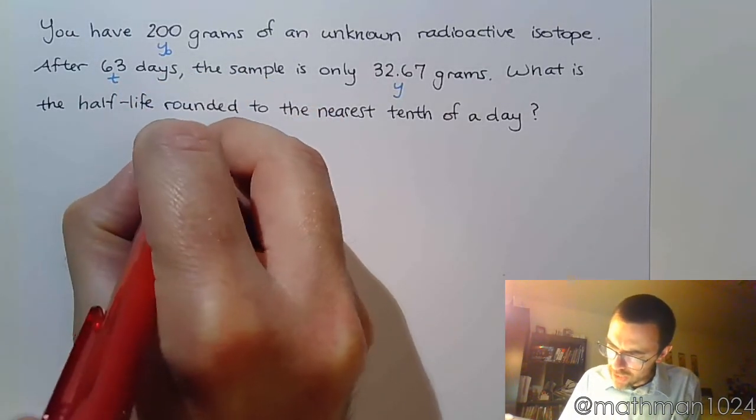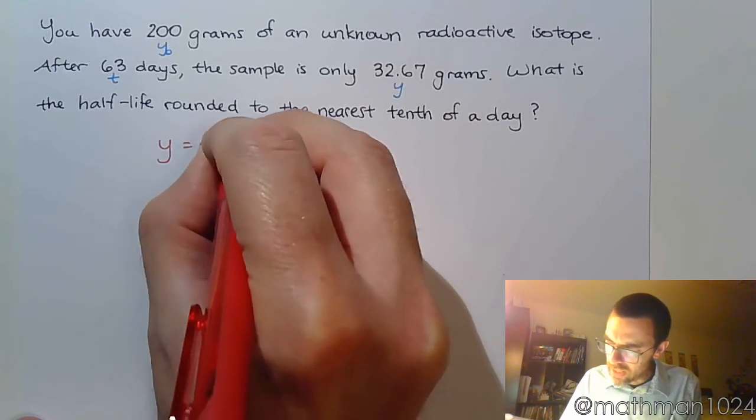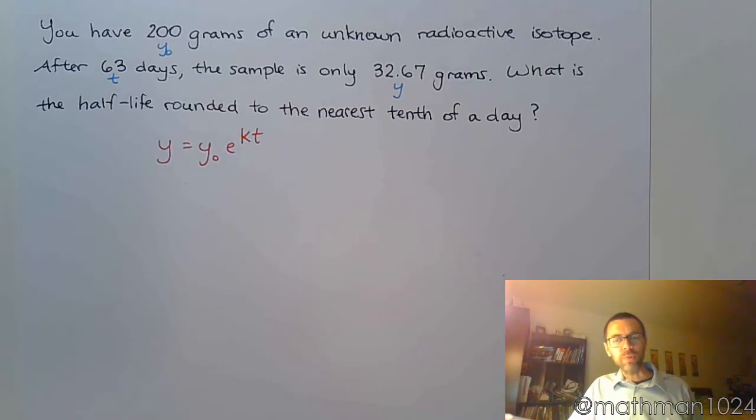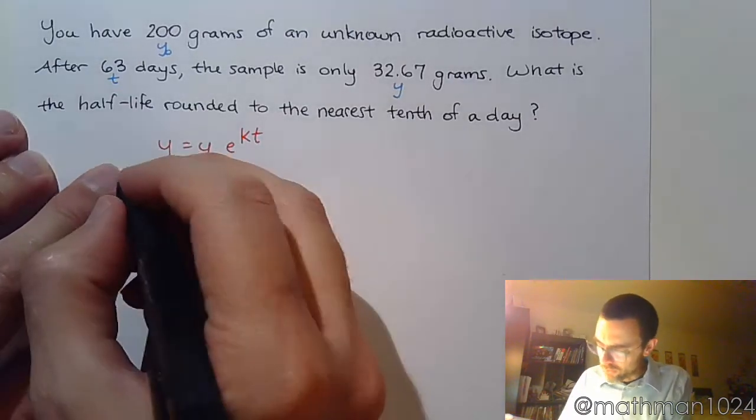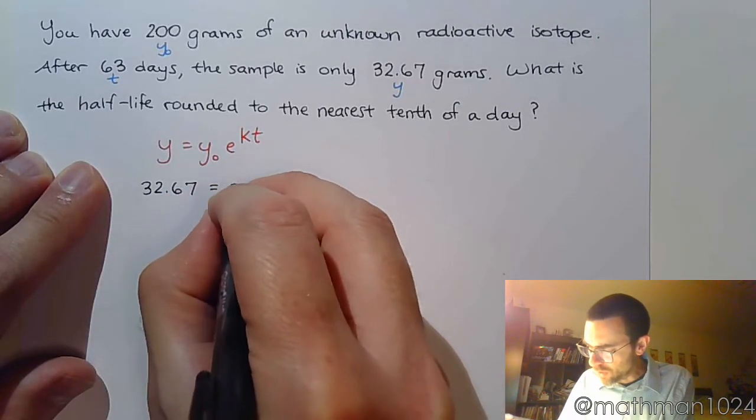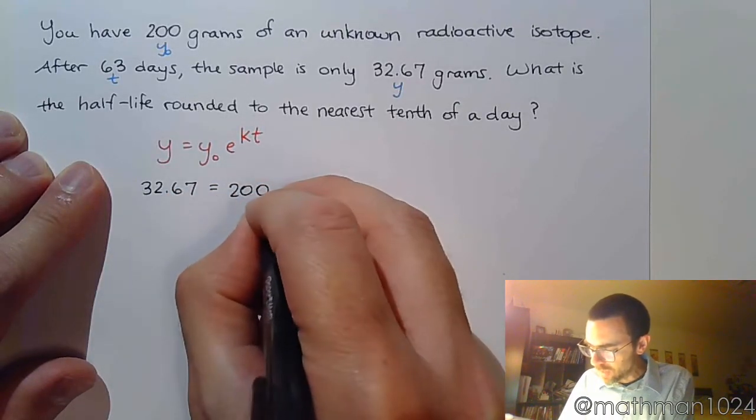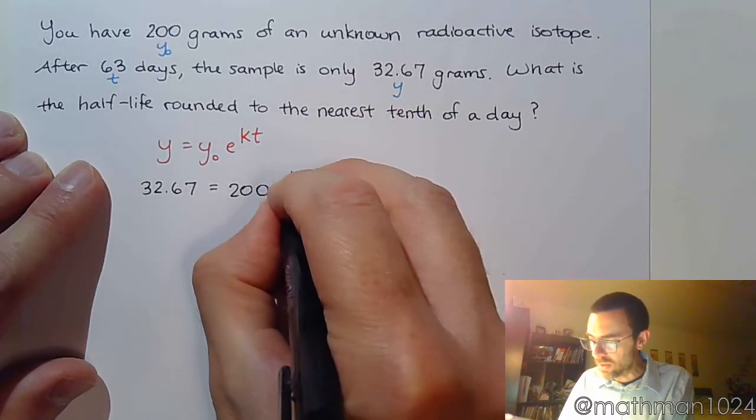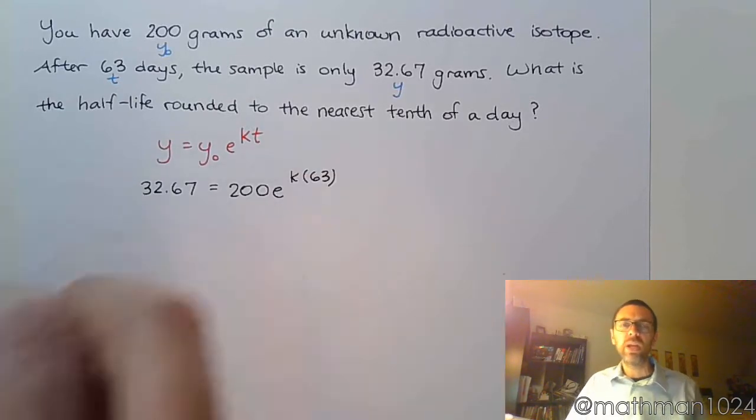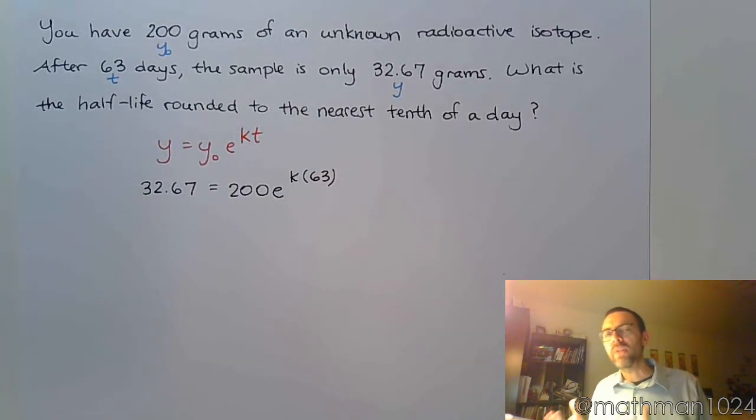So, Y equals Y₀ e to the KT. Let's plug in what we know and then find out that K. We know that my final value is 32.67. Our initial value was 200, e to the, well I don't know what K is, times my T value of 63. And we see here that K is in the power, and we know how to bring that down from the power, which is by taking the log of both sides, but not until we get rid of that 200 in front first.